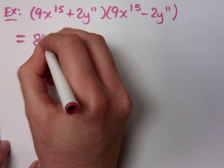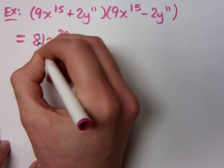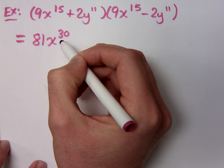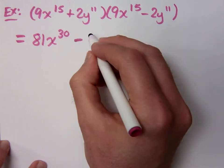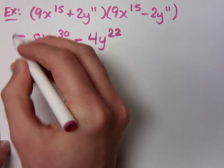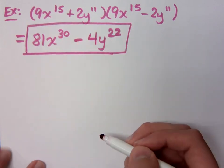81 x to the 30th. So you square the 9 to get 81. When you square x to the 15th, you're just going to double that and you get 30, because exponents work a little bit differently. Minus what? 4 y to the 22nd. Done.